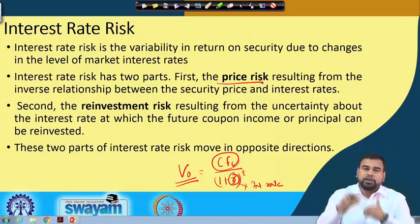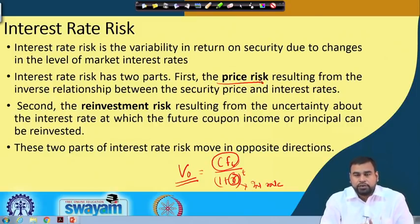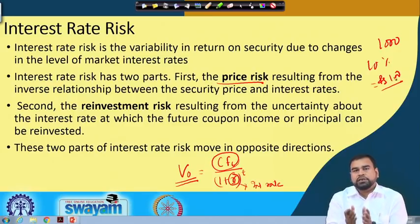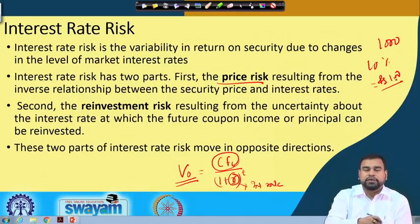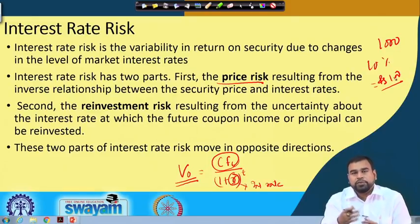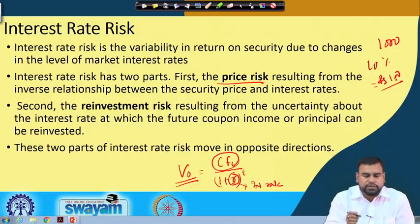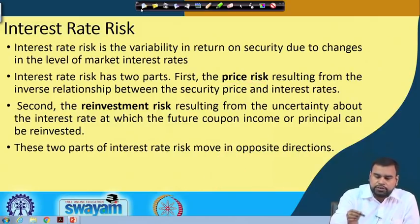For example, if the par value of the bond is 1000 rupees and the coupon is 10 percent, every year you get 100 rupees. If that 100 rupees is reinvested in the market and the interest rate goes up, you can get some more return. Therefore, the price risk and reinvestment risk work in the opposite direction.